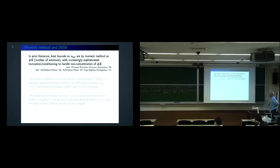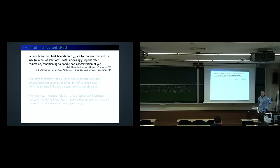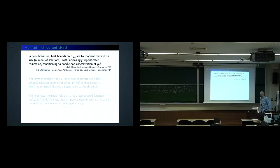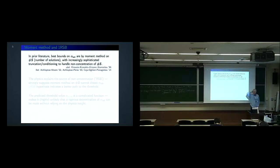How do you find bounds on alpha-SAT? The bounds are done by the moment method: take the number of solutions and calculate moments. You like moments because you can distribute the randomness over the graph and get a nice formula since many things are independent. You can do the first or second moment directly, but they don't give the right prediction. So people made increasingly sophisticated moment calculations with truncation or conditioning to deal with the fact that the typical value is not equal to the mean.